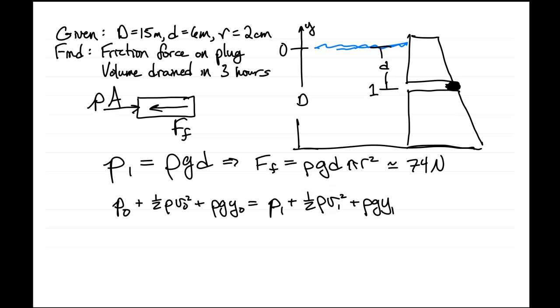Now some of these terms we can get rid of. p0 and p1 are the same at the atmospheric pressure. v0 is 0 at the surface and we know what y1 and y2 are.